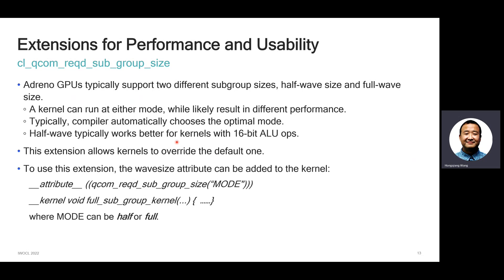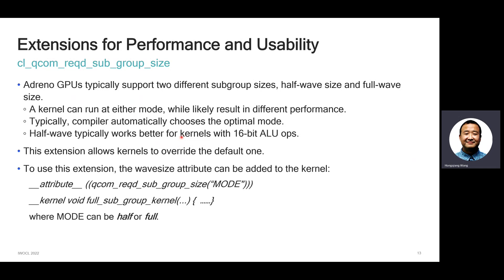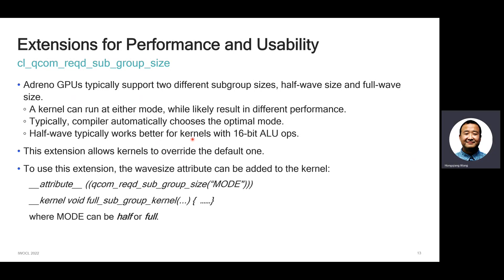We also have an extension called CL Qualcomm requires subgroup size. Adreno GPUs typically support two different subgroup sizes: half-wave size and full-wave size. A kernel can run in either mode with different performance characteristics. Typically, our compiler can automatically decide which mode works best. Half-wave generally works better for kernels with more 16-bit ALU operations. With this extension, developers can override the default choice — sometimes the compiler has difficulty figuring out the optimal one — and try which mode works better.